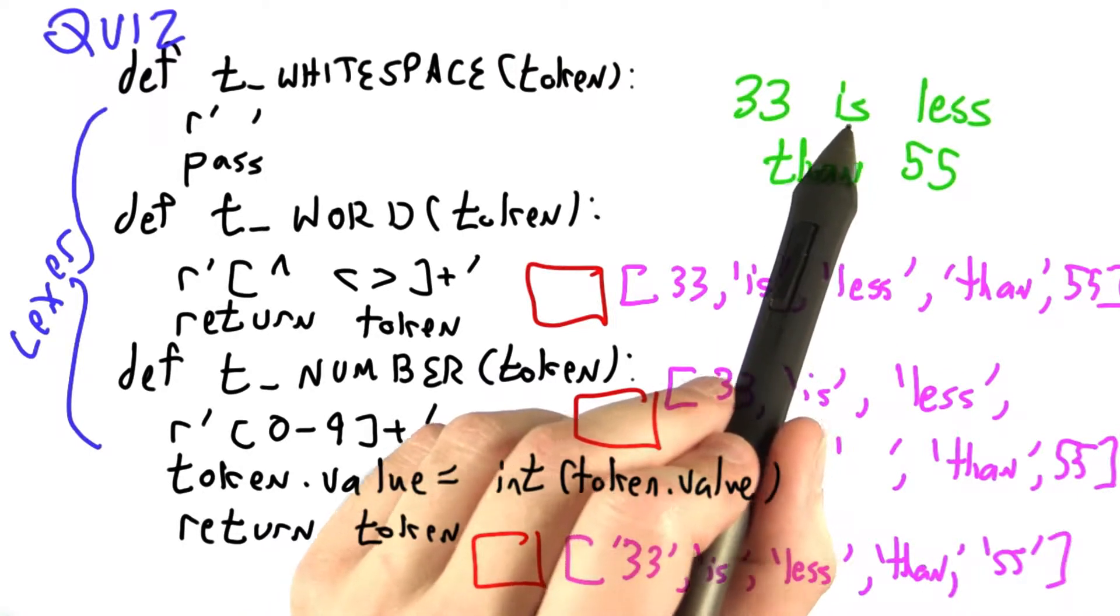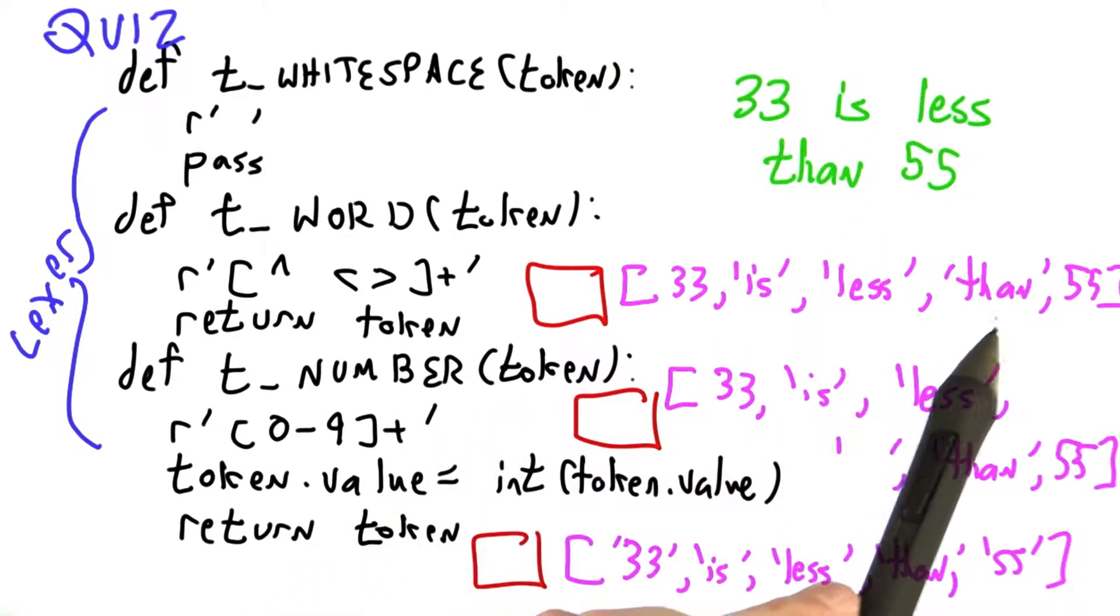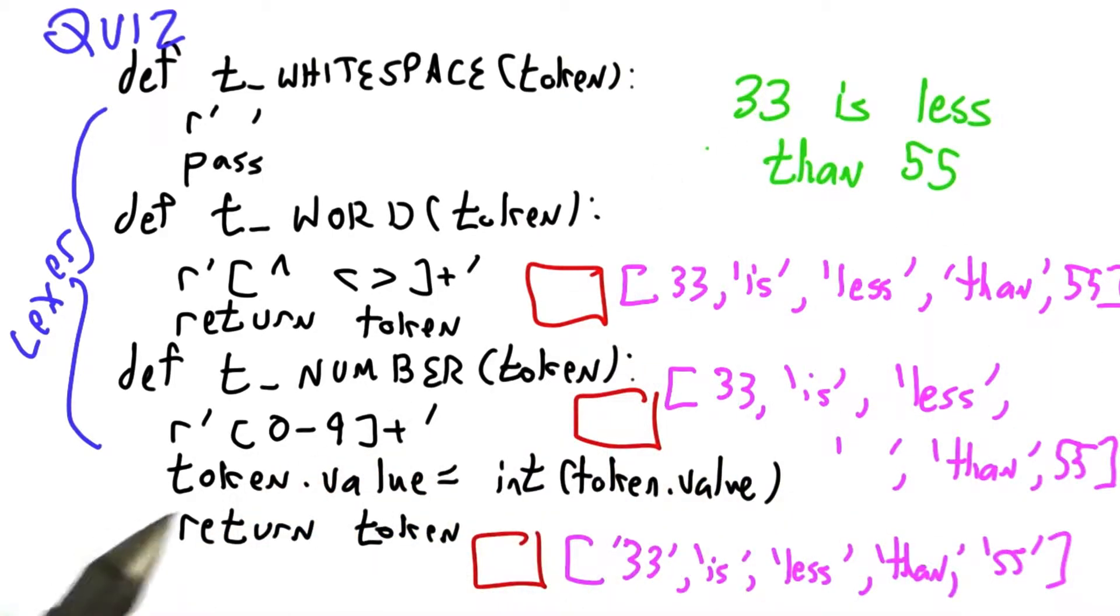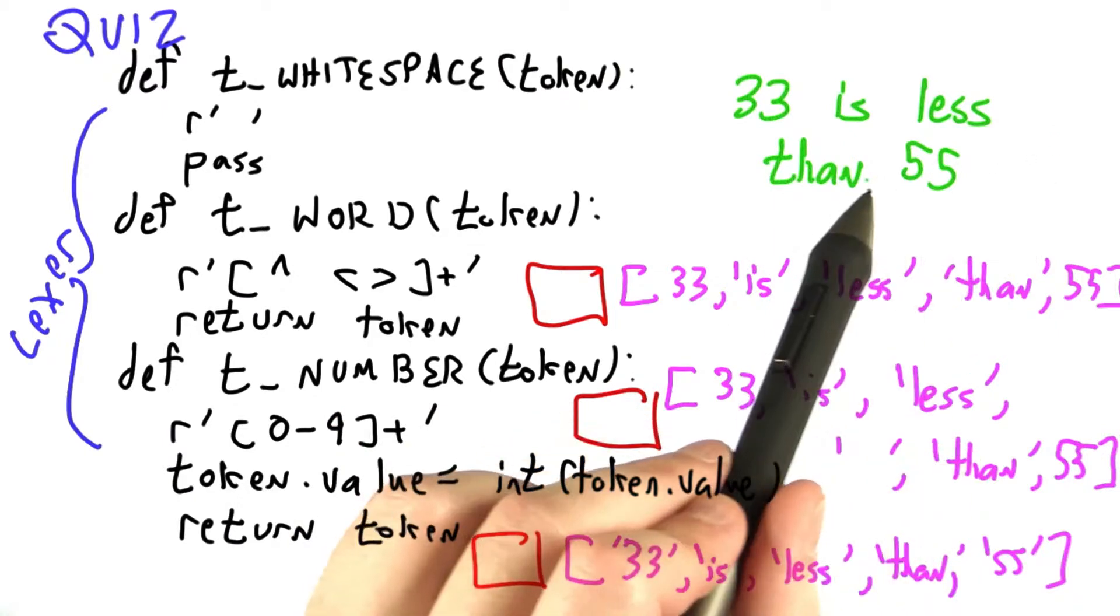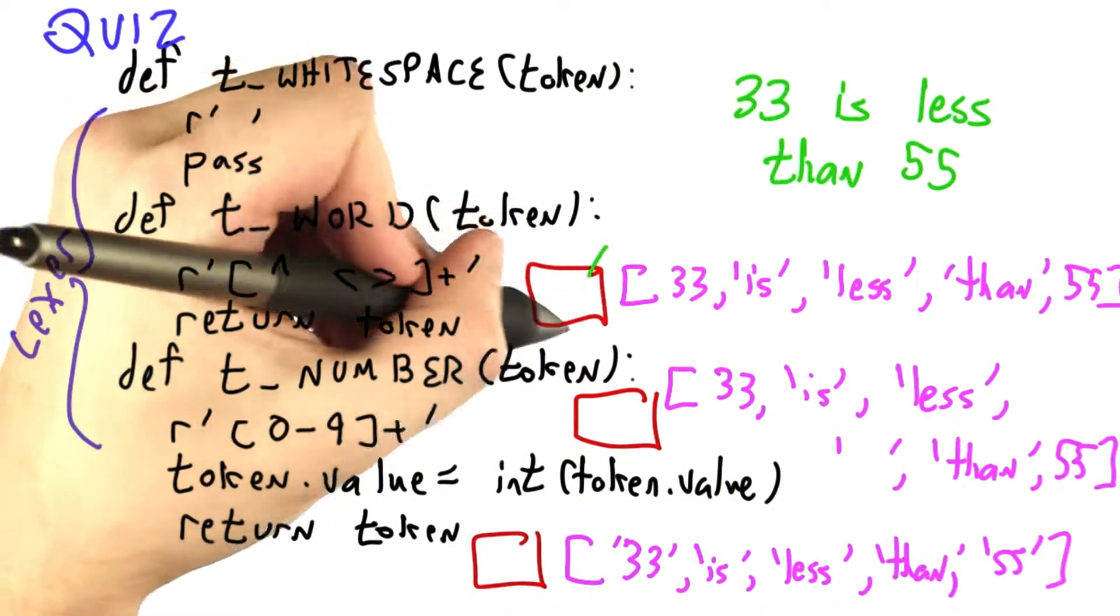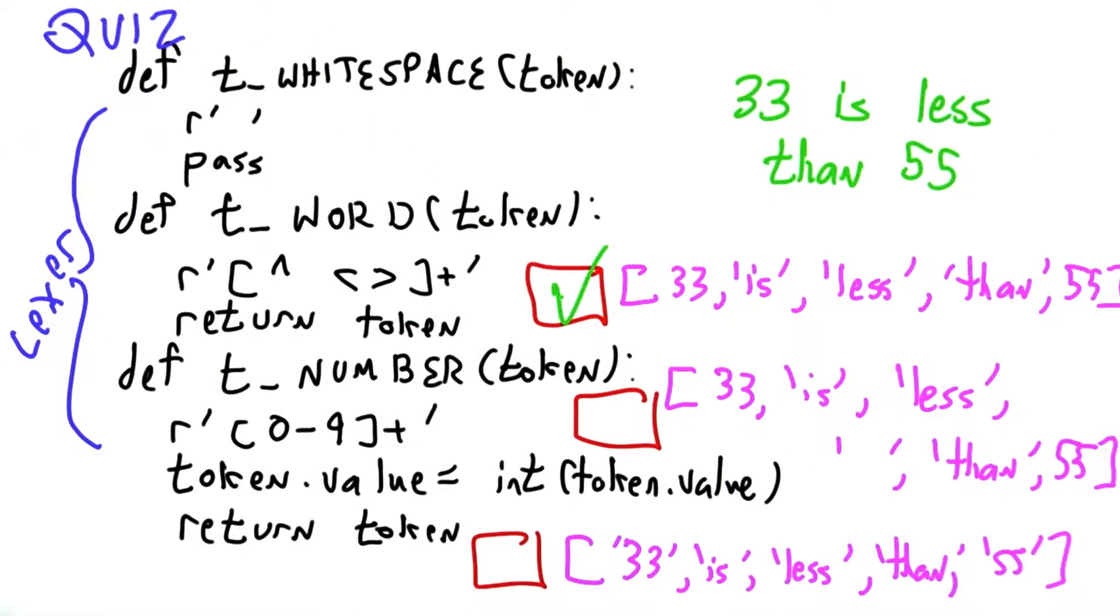Is will match the word is, less will match the word less, then will match the word then. 55 could be converted to a number, give us the integer 55, and all of this whitespace in the middle will be dropped. So this is a possible answer.